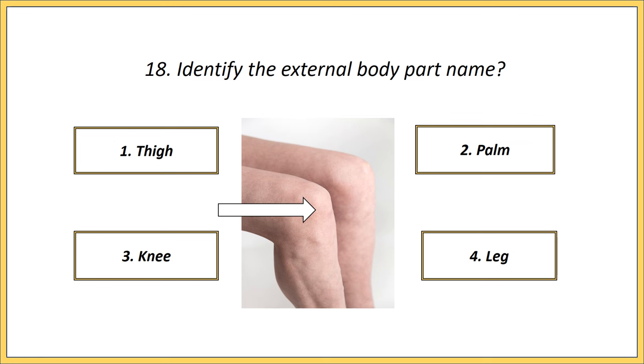Eighteenth one. Identify the external body part name. Options: tie, palm, knee, lid. Answer is knee.